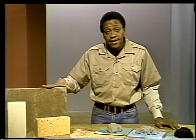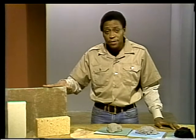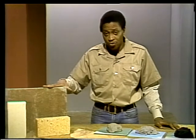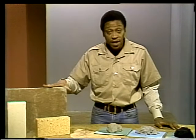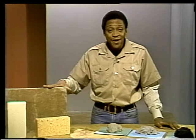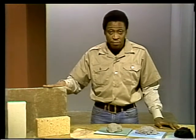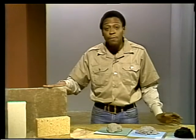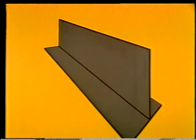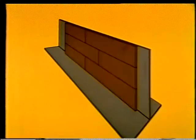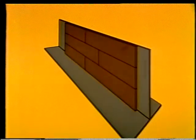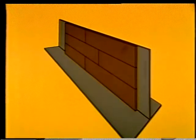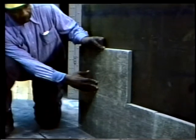Diatomaceous earth is soft, lightweight, and composed mainly of microscopic shells from marine organisms. It's a tough name, but you're likely to hear this term around the plant, or see it on packing slips that come with the insulating block. Insulating block is the outermost layer of the refractory wall and is laid without mortar.